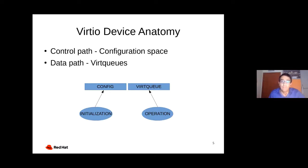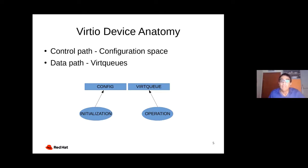If you look at the specification of any Virtio device, there are usually two parts to it. One part is device configuration — this is the control path interface used for initialization and things like that. But during data path operation, the driver manipulates data in virtqueues. This resides in guest RAM and is accessed by the device using direct memory access.